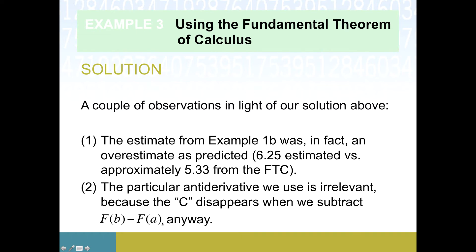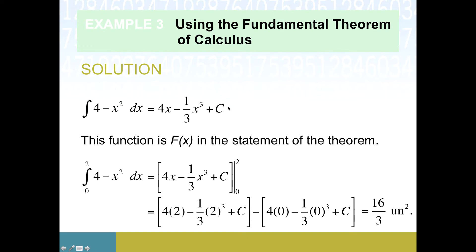That's because when you take F of b and subtract F of a, if there's a constant in this term it's also going to be present in this term, and when you subtract them they go away. So we could have removed this C term entirely and used a particular antiderivative where C was zero. To make this clear: pick your favorite number, say plus seven. You'd have a plus seven here, but you'd also subtract that seven, so it wouldn't have made any impact. No matter what C is, it disappears from the definite integral calculation. I want to stress that doesn't mean it's irrelevant for antiderivatives in general. If we're doing an indefinite integral, we really do still need that arbitrary constant to remind us that this is a whole family of solutions.